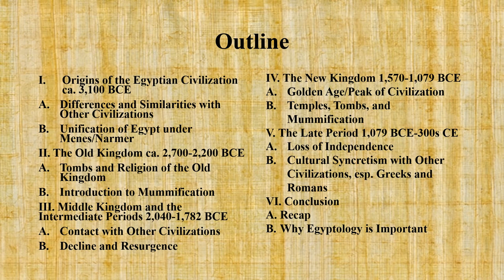After that, we'll cover the New Kingdom from about 1570 to 1079 BCE. The New Kingdom is often thought of as being the golden age of the Egyptian civilization, as they reached the peak of their monumental architecture in terms of their temples and tombs, as well as the sophistication of their mummification techniques. Also, some of the most famous Egyptian rulers came from the New Kingdom. Finally, we'll discuss the late period from about 1079 BCE to about 300 CE. During this period, the Egyptian civilization lost its independence. It also experienced increased cultural syncretism with other civilizations, especially the Greeks and the Romans.